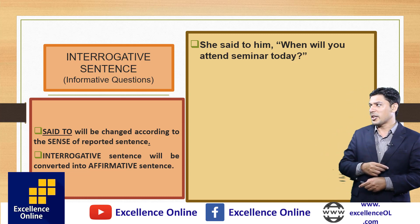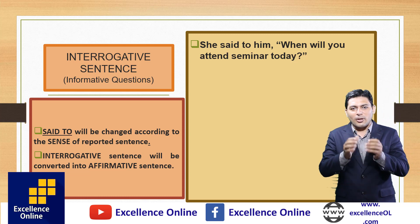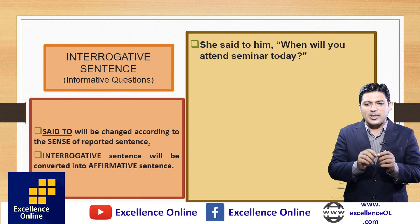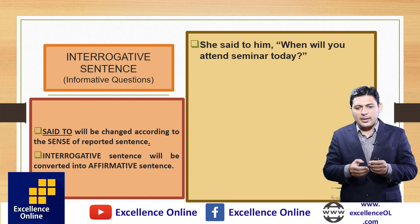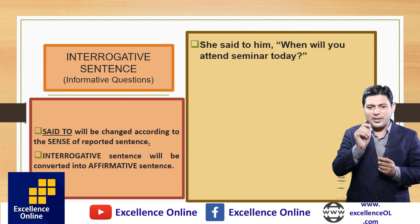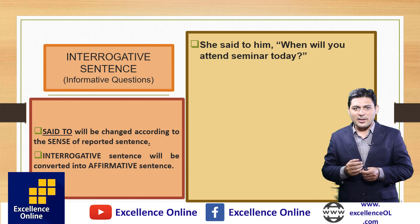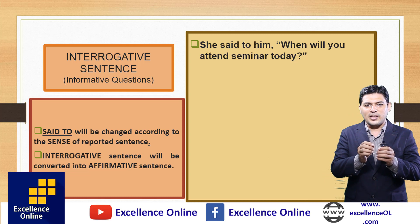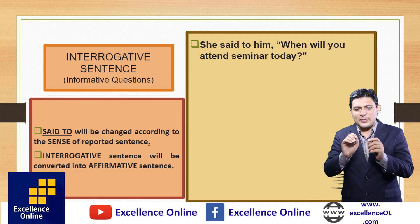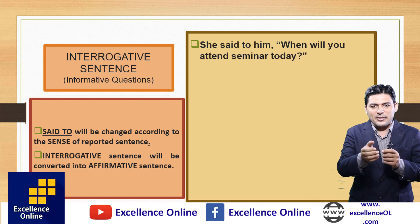Now we discuss the second type of interrogative sentence: the informative question. Informative questions use WH words — there are nine WH words used for communication and interrogation. Example: 'She said to him, when will you attend seminar today?' This reported speech ends with a question mark. The question starts from the WH word 'when,' which means it is informative.